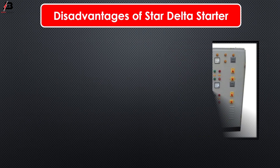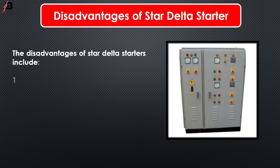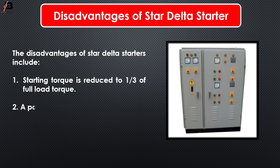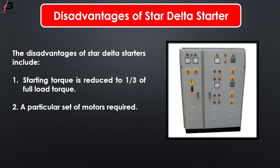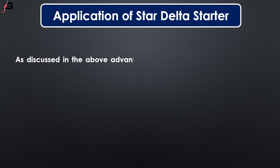Disadvantages of star delta starter: The disadvantages include: 1. Starting torque is reduced to 1/3 of full load torque. 2. A particular set of motors is required.